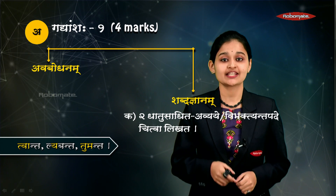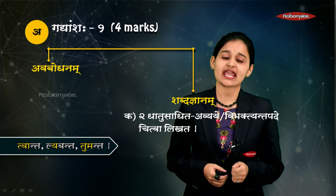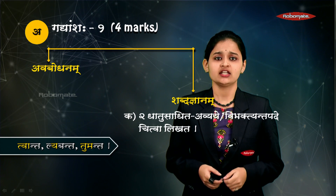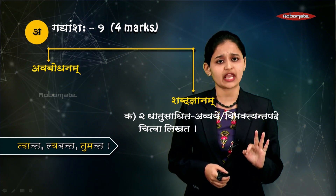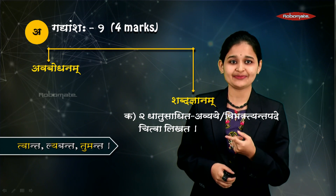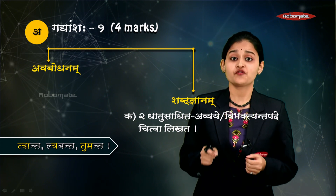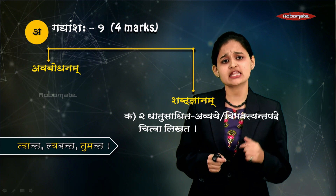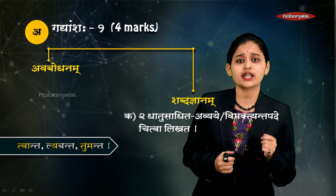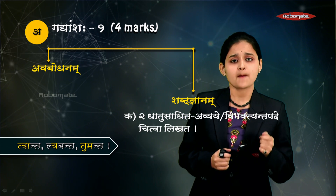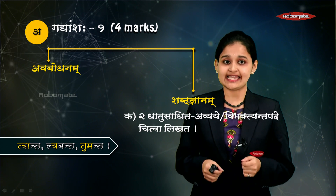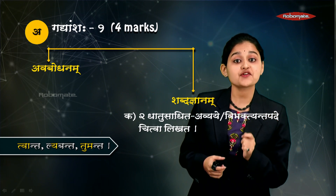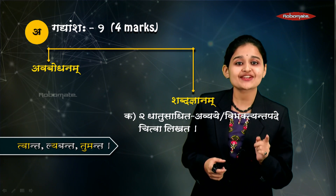In Shabdad Jnanam, the first question is dwe dwe dhatu sadhita avyaya va vibhakti yantapade chitva likhata. There are three dhatu sadhita avyayas: paanta, labanta, and tumanta. From the passage we have to write down these avyayas, or it could be vibhakti yantapade — for example, panchami vibhakti chinuta — and we have to pick out words having that particular vibhakti.